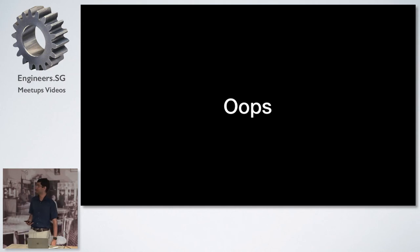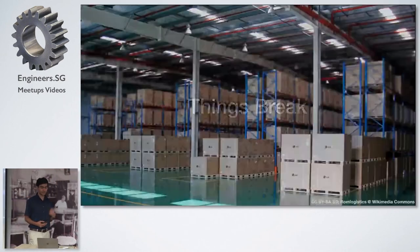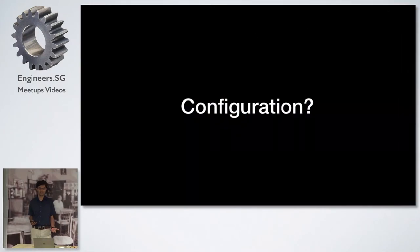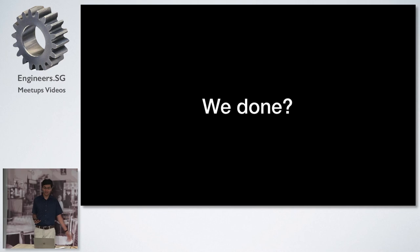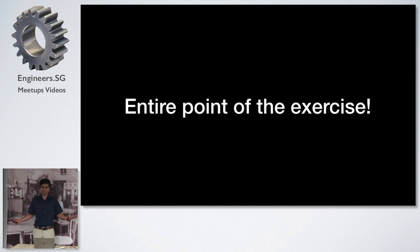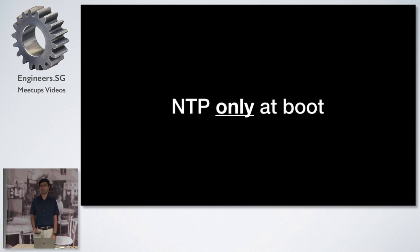Well — over the weekend, we get reports: the time is wrong. Things break. When things break, you go grab a new clock, plug it in, but you forgot an important step: configuration. And it turns out the clocks only ran NTP at boot, and they did drift. The time is wrong, but only by a few minutes — five minutes off. But that was the entire point of the exercise: I didn't want different classrooms at different times. I thought NTP was supposed to solve everything.